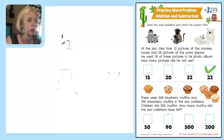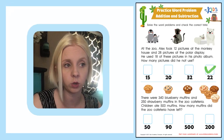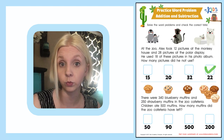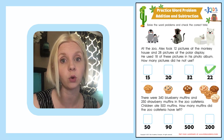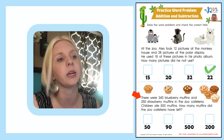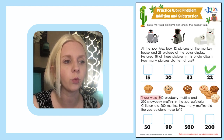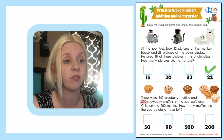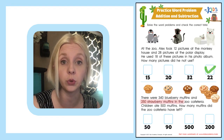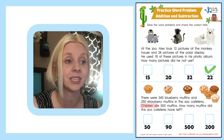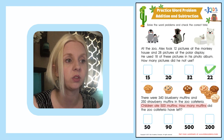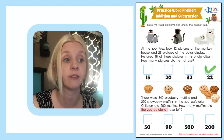Now let's do the next one. It looks like we've got muffins on this one — I like muffins! We're going to read through the story and find out what we need to do. It says: there were 340 blueberry muffins and 250 strawberry muffins in the zoo cafeteria. Children ate 500 muffins — ooh, that's a lot of muffins! How many muffins did the zoo cafeteria have left?